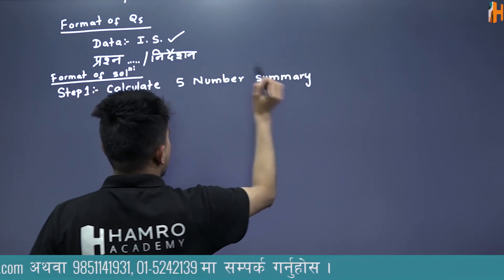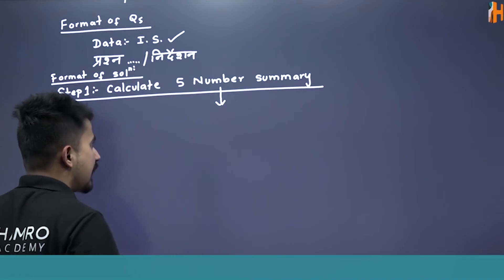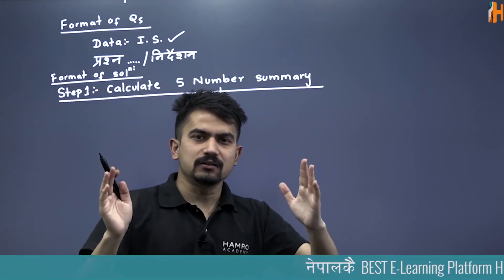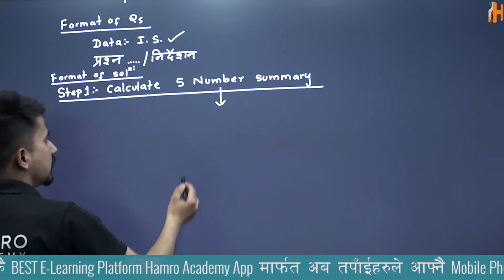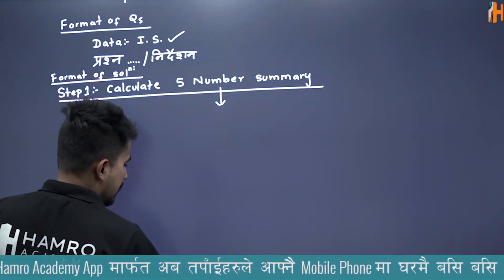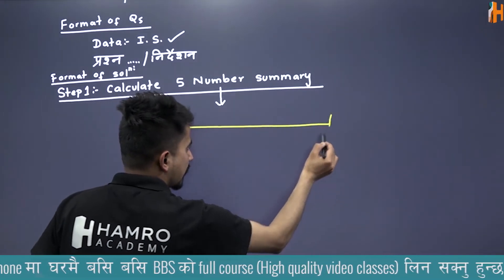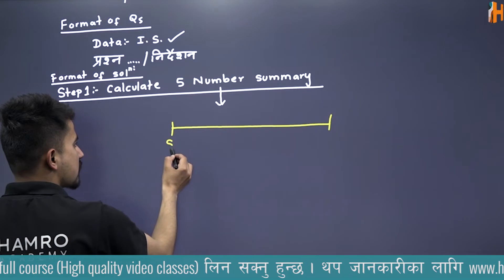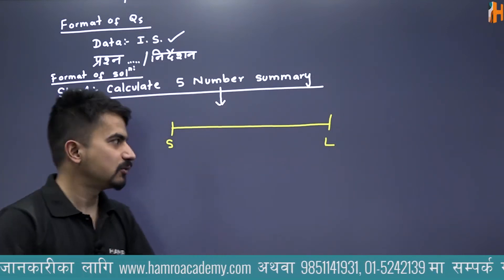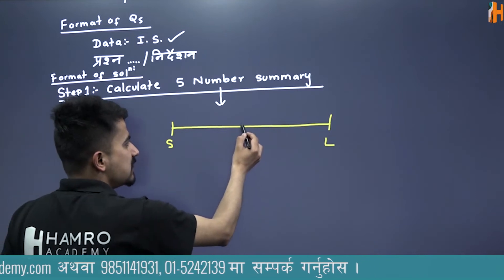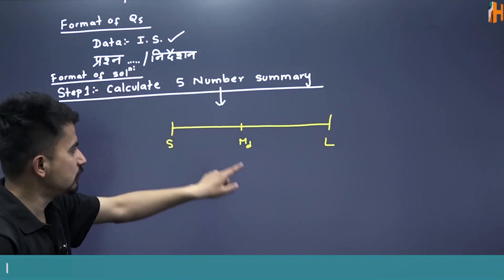Five number summary बनेको — किन बन्दाखेरी? Five number summary बनेको — data मा धेरै number अरू हुन्छन्। त्यो मध्ये 5-वटा यस्ता number हुन्छन् जसले त्यो data को summary बताइदिन्छ, सारांश बताइदिन्छ।